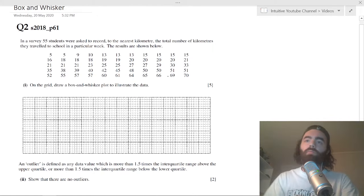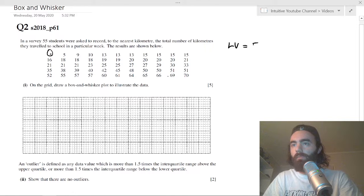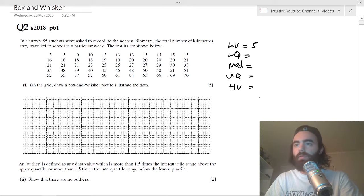To draw a box and whisker plot, we need some key information from the data. We need the lowest value, which is 5, the lower quartile value, the median, the upper quartile value, and the highest value, which is 70.